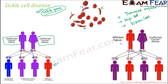Now, what if one of the parents is already affected? If the father is affected and the mother is unaffected but a carrier, the possibility of disease in the next generation is all the more. In this case, the possibility of having an unaffected normal child is not there at all. Fifty percent of the children will be affected by the disease, and fifty percent will not be affected but will be carriers of the defective gene.